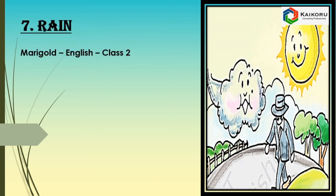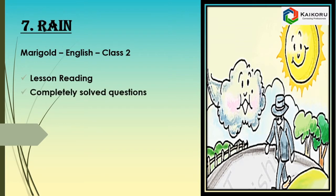Hi kids, in this video we are going to discuss the chapter Rain, which is taken from the book Marigold, English Class 2, and this is NCERT Syllabus. In this video we are going to read the lesson and also completely answer the questions.